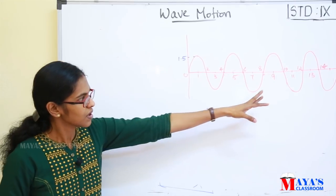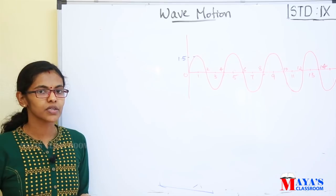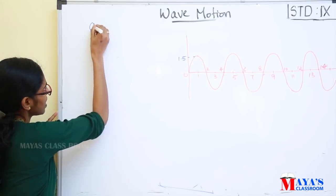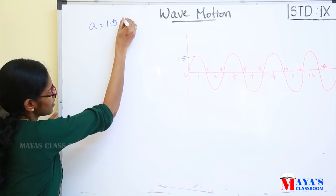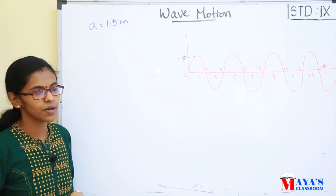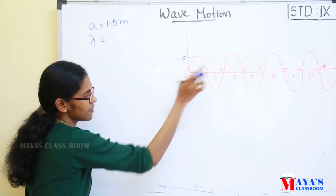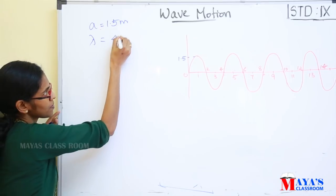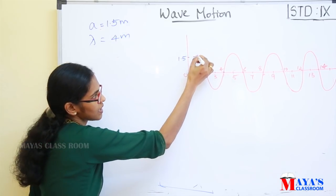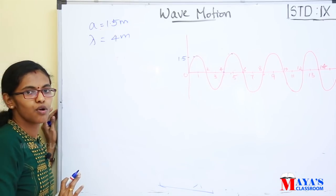If you look at this graph, the distance is 0 to 14 or 15. What is the amplitude of the wave? That is 1.5 meters — the amplitude of the wave is 1.5 meters. What is the wavelength? The wavelength is lambda. From the crust numbers, the distance is 5 minus 1 equal to 4 meters — wavelength is 4 meters.